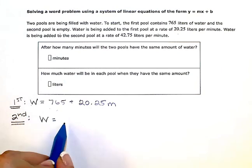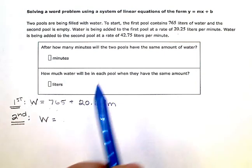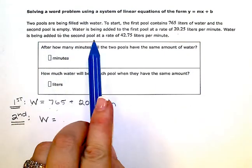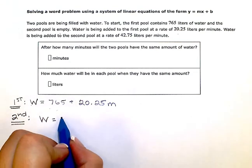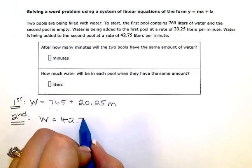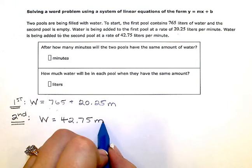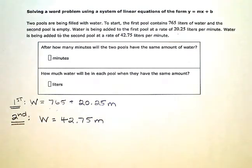But water is being added to the second pool at a rate of 42.75 liters per minute. So 42.75 liters per minute. So there's my two equations.